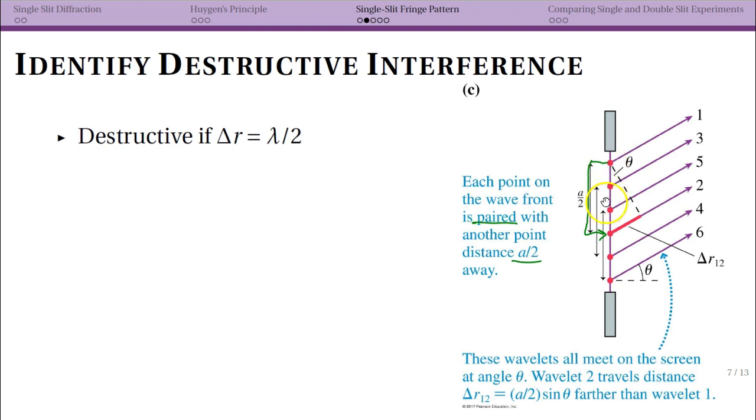If we then consider only one pair at a time, we are in the same type of analysis that we did for double-slit interference. However, we are—and this is important—we are identifying positions of destructive interference. We see based on the same type of analysis that we did for single-slit that we have our angle there and we have our path length difference Δr. So Δr for this pair will be destructive if this length is λ/2.